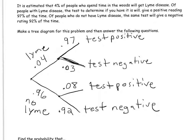Now I need to fill in the four probabilities at the end of the tree by multiplying down the branches. So it's 0.04 × 0.97 = 0.0388, meaning about 3.88% of people have Lyme disease and test positive. Then 0.04 × 0.03 = 0.0012. Then 0.96 × 0.08 = 0.0768. And 0.96 × 0.92 = 0.8832.